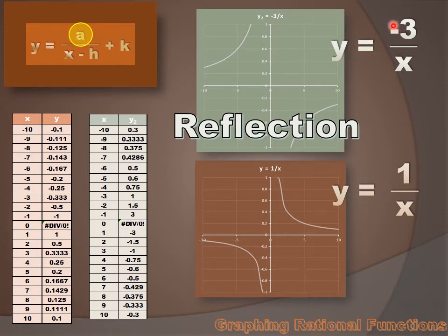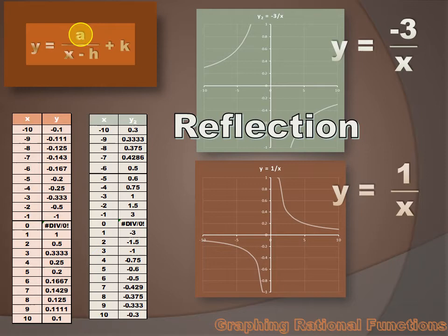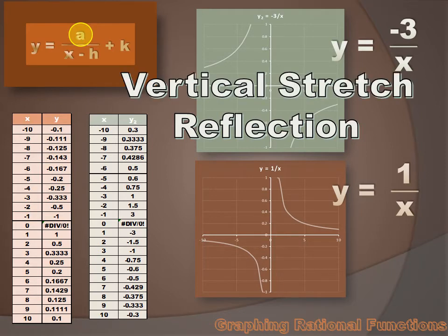That negative sign made all our values negative, or the opposite of what they were in the parent. I can also see that my values have been changed — when x equaled 1 in the parent, y equaled 1. But in this new function, when x equals 1, y equals minus 3. I've multiplied that y value by minus 3. That negative sign is going to reflect the curves around the y-axis, and that 3 is going to stretch the y values away from the origin. It's going to create vertical stretch.